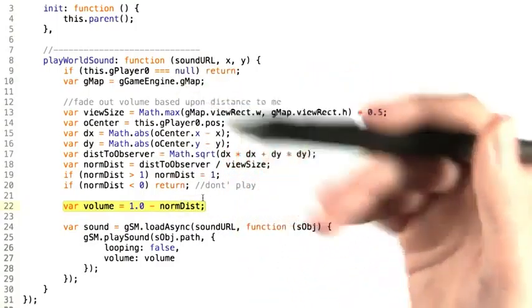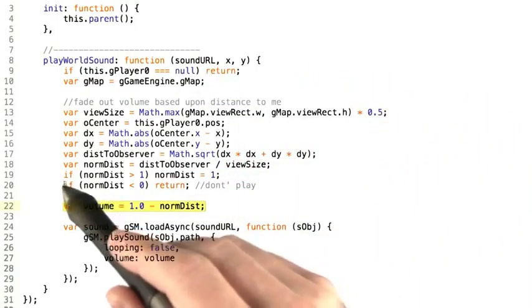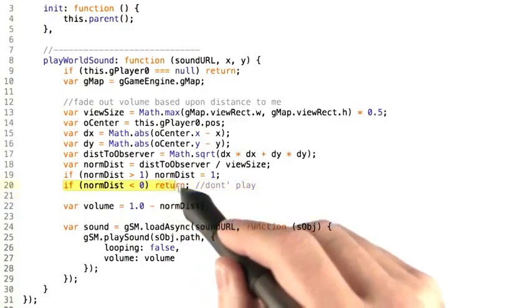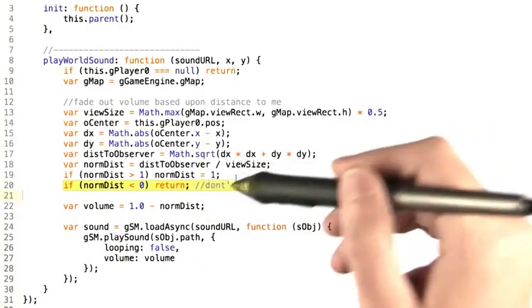And it doesn't really make sense to have a negative volume. If the norm distance is, for whatever reason, less than zero, then we simply return and don't play.